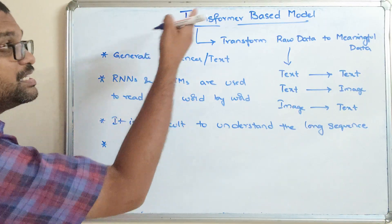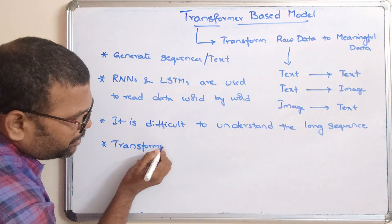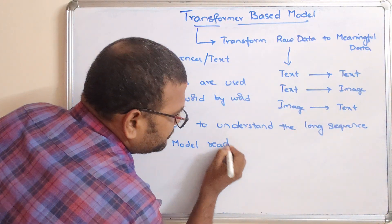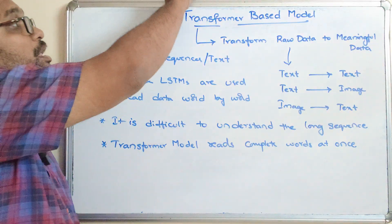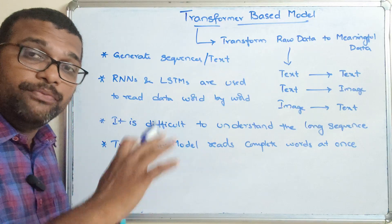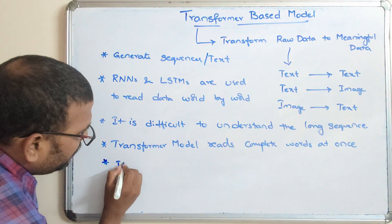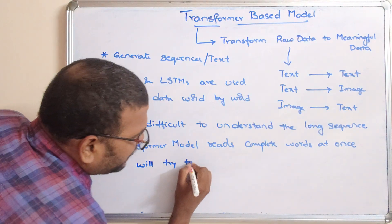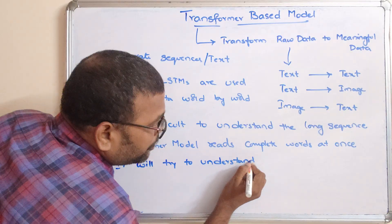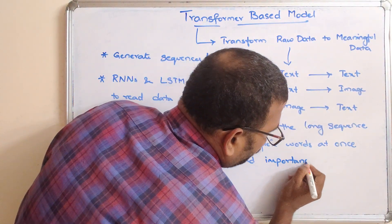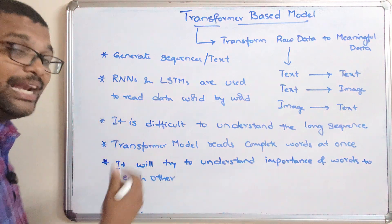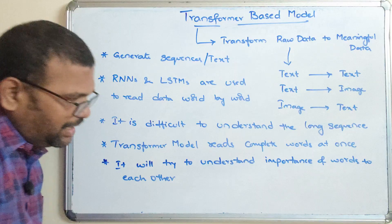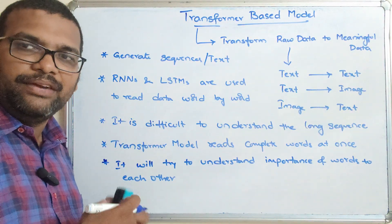So let's approach the transformer model. The transformer model reads complete words at once — instead of reading word by word, it reads all the words in one instance. And finally, it will try to understand the importance of words relative to each other, how they relate, the relationship between words. From that understanding, it will be generating new words.